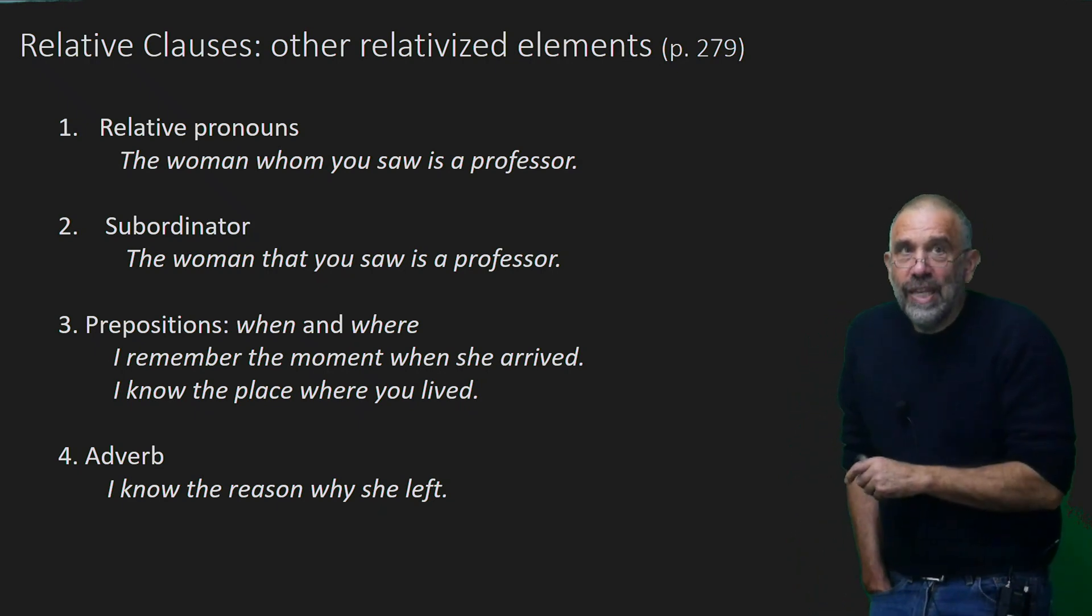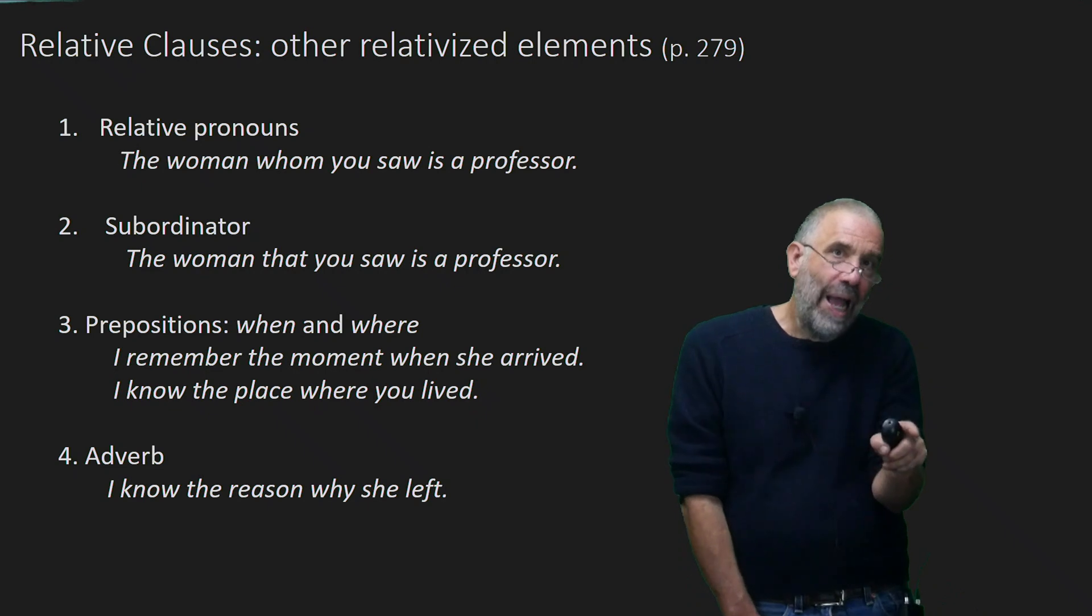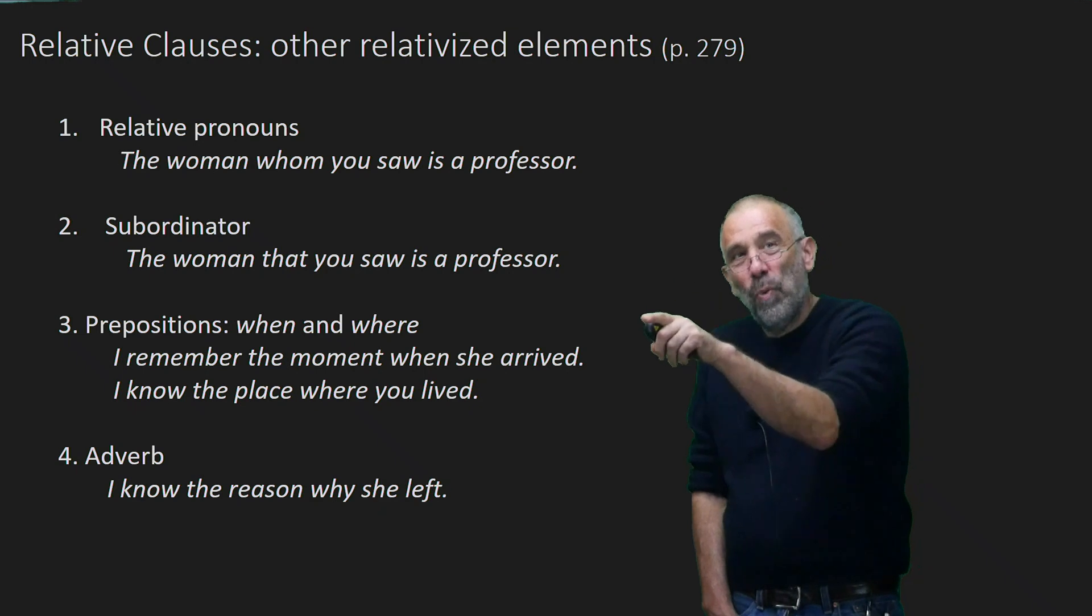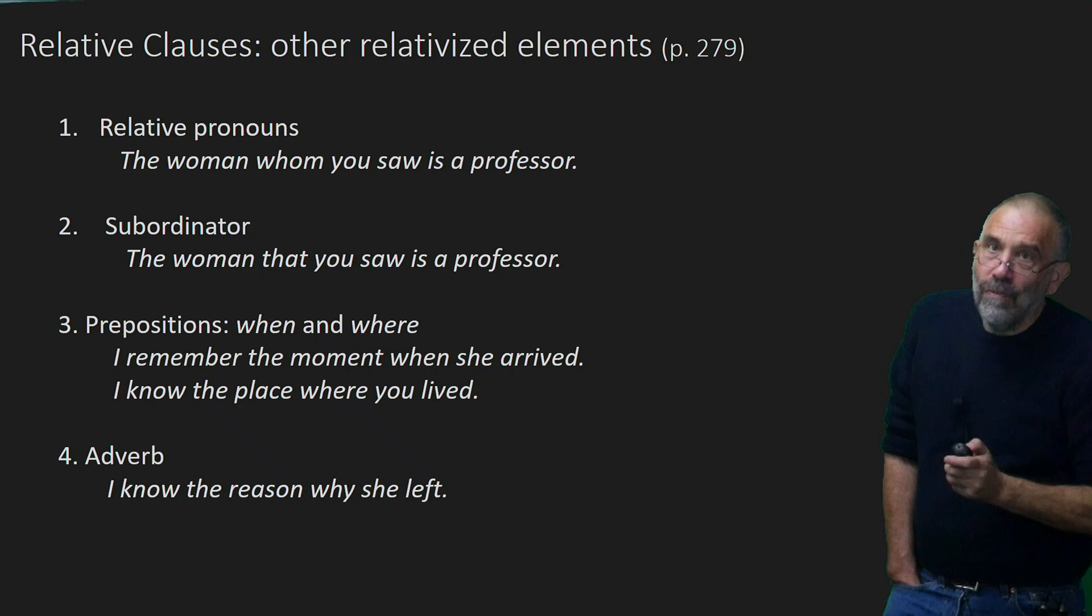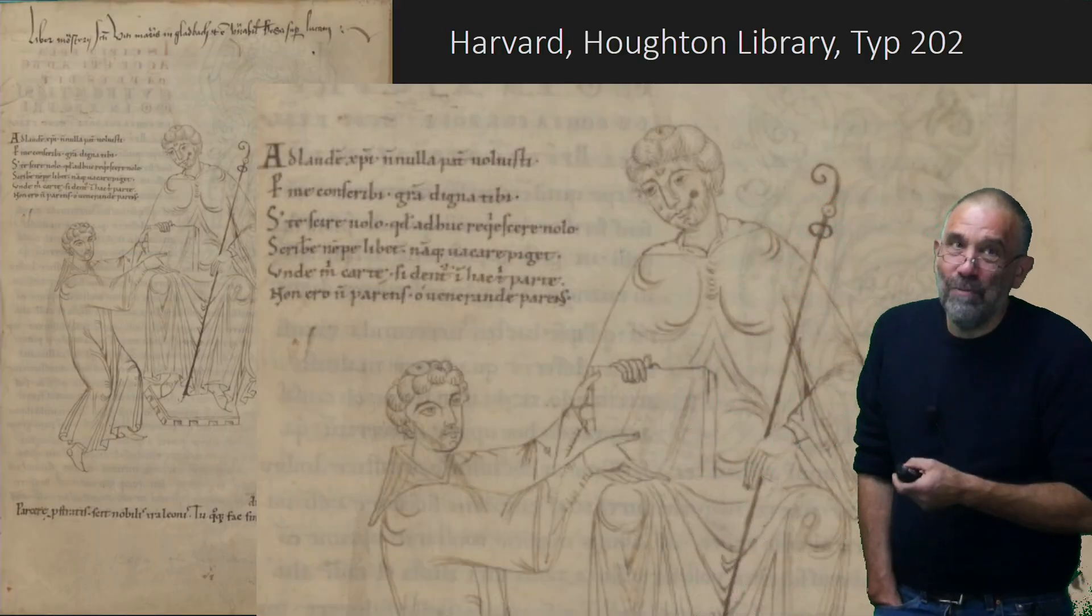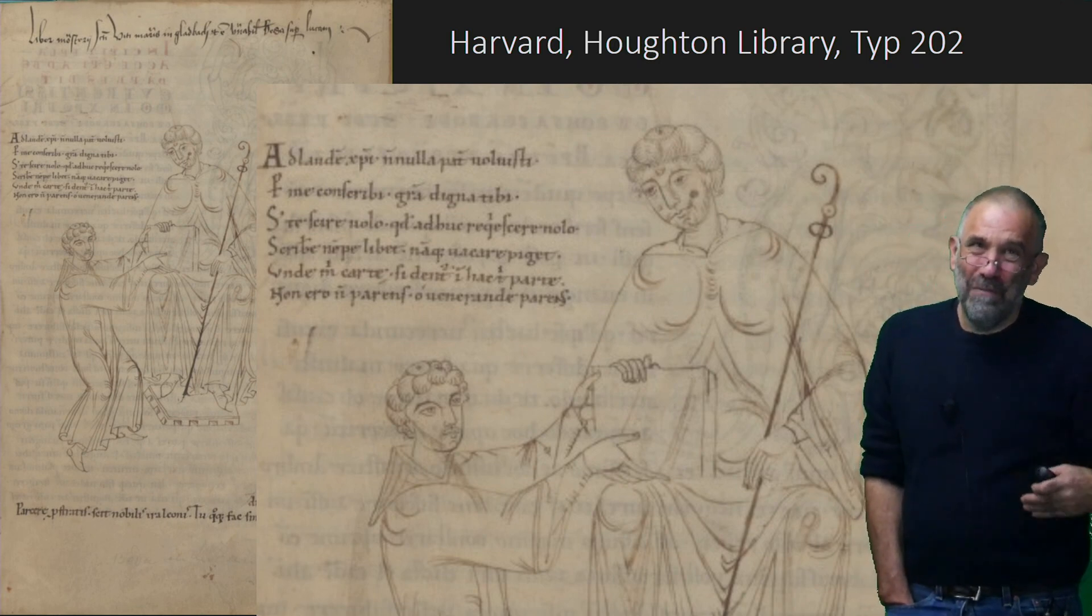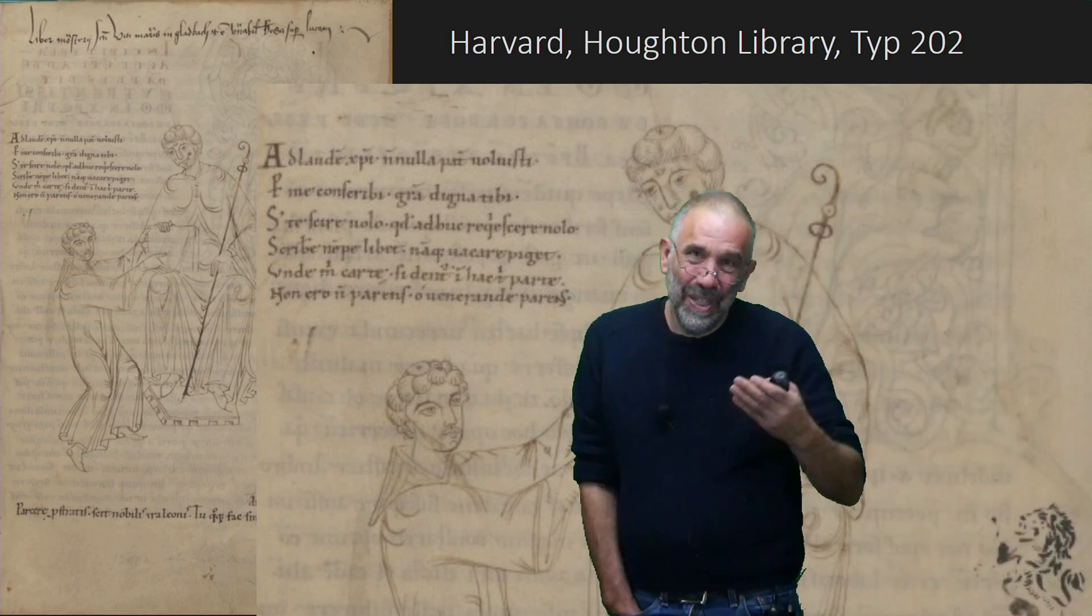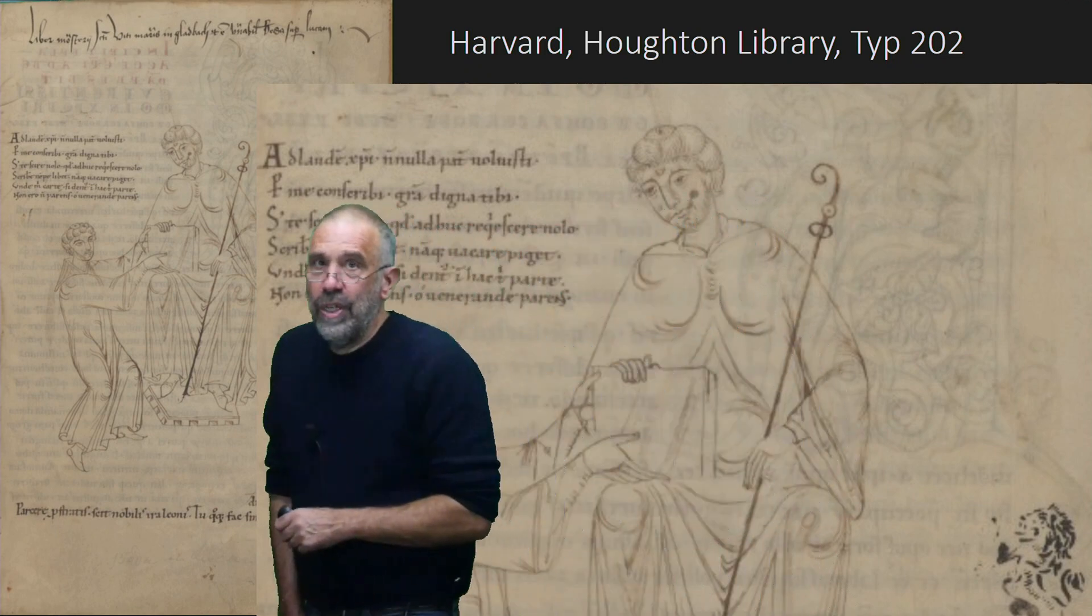And then finally, the adverb. I know the reason why she left. Reason being what why is referring directly back to. So I think we've covered a lot of ground. There's some things that we'll have to work on in the self checks. But you need this cold to be able to do the more confusing work for next week. And then we're done with these finite subordinate clauses. Good luck. See you in class.